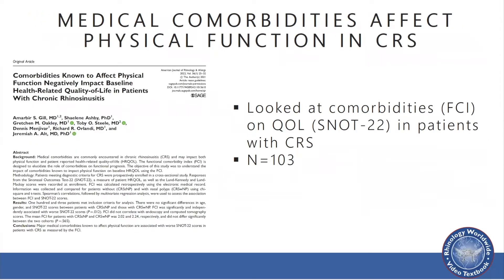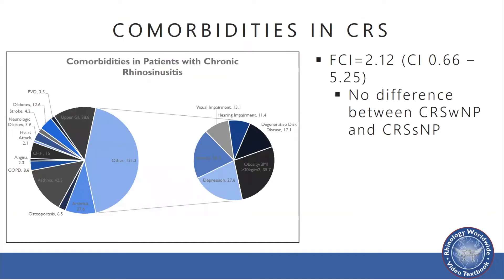This led to additional work by Gil et al. that looked at comorbidities known to affect physical function and their negative impact on baseline health-related quality of life in patients with CRS. Specifically, they looked at the SNOT-22, a patient-reported outcome measure in CRS, as it related to the FCI, with a total of 103 patients. They found that patients with CRS had a significant amount of comorbidities, with an FCI of 2.12 and a confidence interval of 0.6 to 5.25.